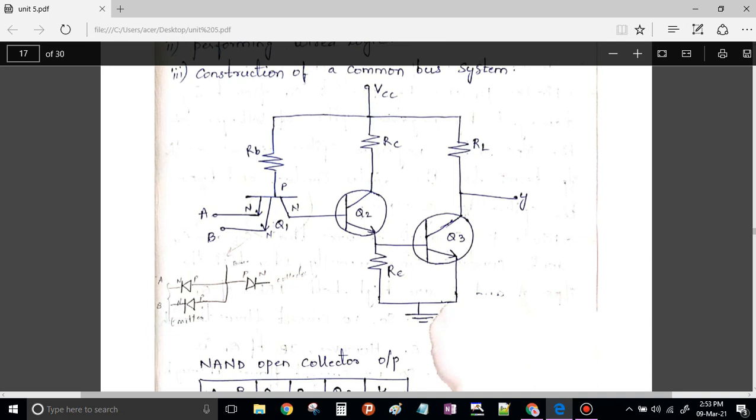For standard TTL, propagation delay time is 9 nanoseconds and the power dissipation of the gate is 10 milliwatts. Whenever we say logic 1, it means the voltage range is from 2 to 5 volts, and whenever we say logic 0, it is from 0 to 0.8 volts. The standard TTL gate was the first version in the TTL families.